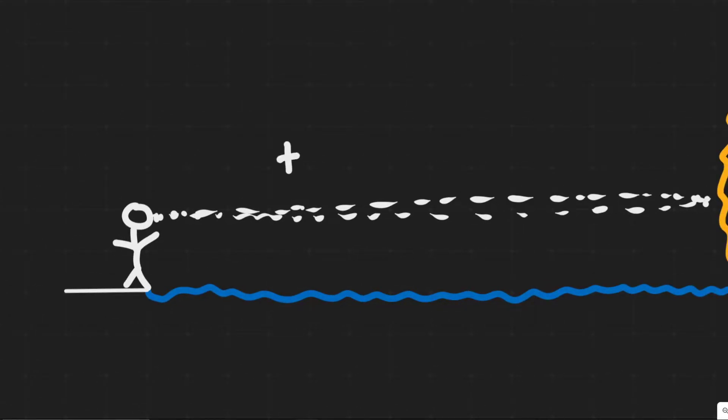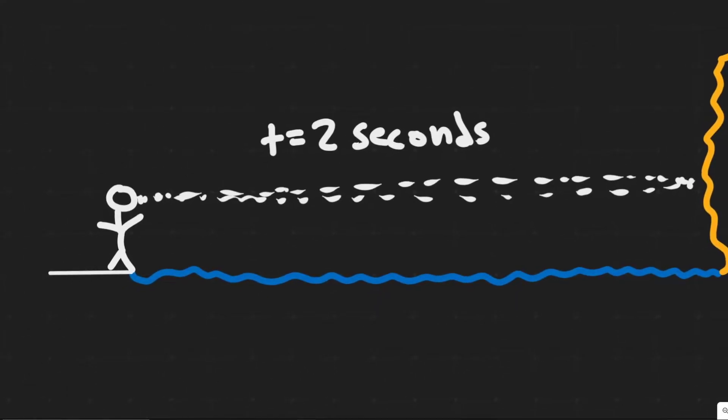And so we know the time that this entire thing is going to take is two seconds. So we can say t equals two seconds. And so what we're trying to find is this distance right here. We can call it d, which is just the length of the lake.